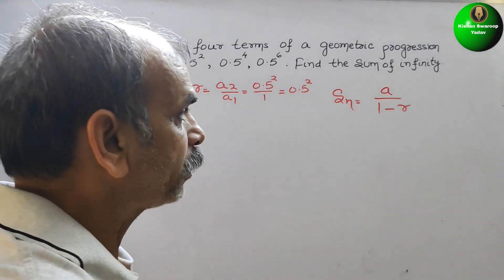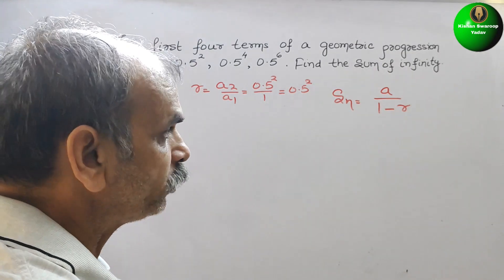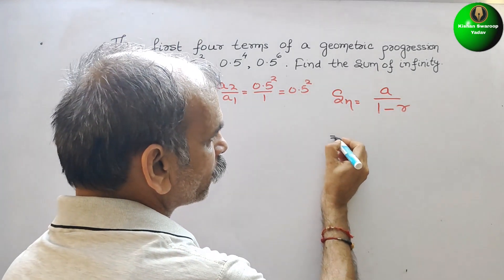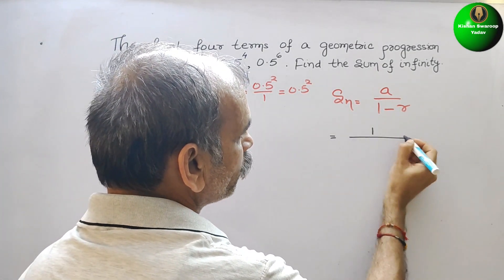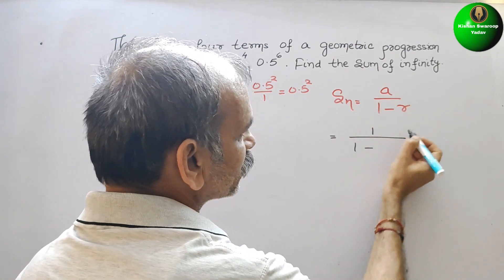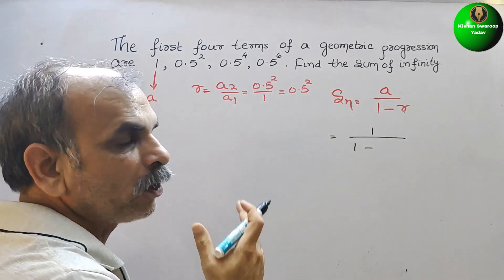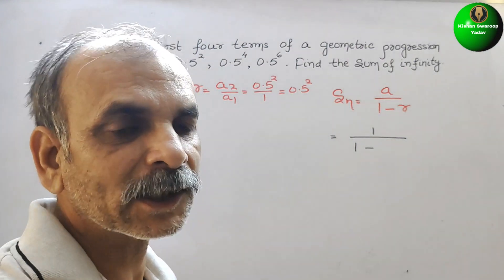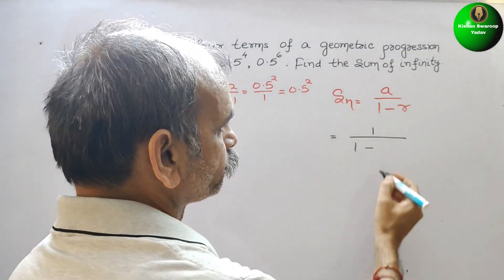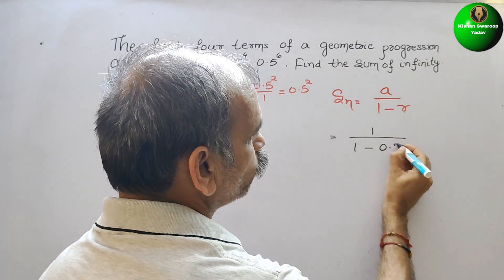Now we will substitute this value here. Here we will get 1 by 1 minus r. You can see 0.5 square, that is nothing but 0.25.